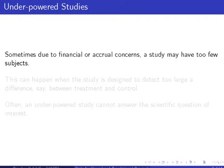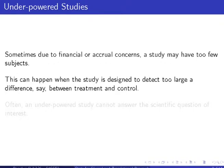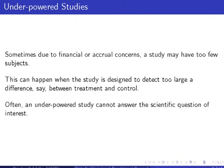Underpowered studies — we've all seen them. When you submit a study, it's always on paper at least 80% power; otherwise you don't even bother to submit. But this can be played with: you can always target a large difference and then you'll have enough power, or almost. The truth is that your treatment is not so magical — you'll never achieve such a large difference — and you're not really answering the scientific question.